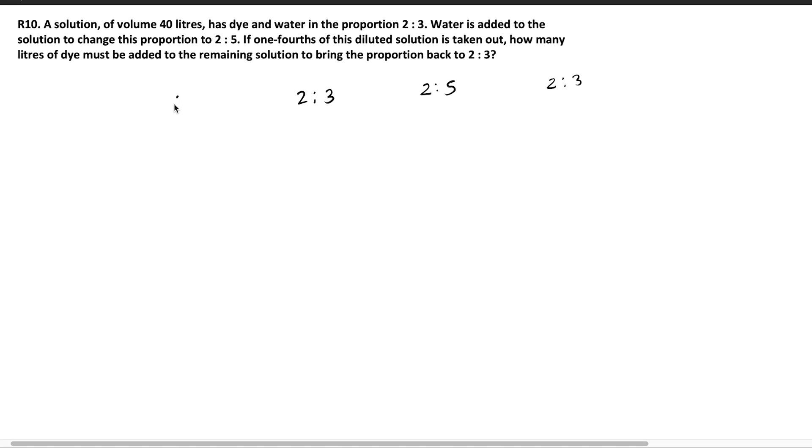The question says there is a solution of 40 liters which has dye and water in the proportion 2 is to 3. Water is added to the solution to change the proportion to 2 is to 5. So the ratio of dye and water is 2 is to 3, which means out of 40 liters, 16 is dye and 24 liters is water.